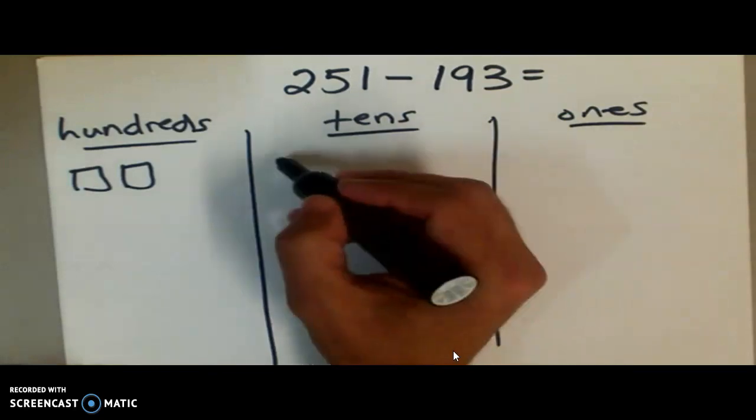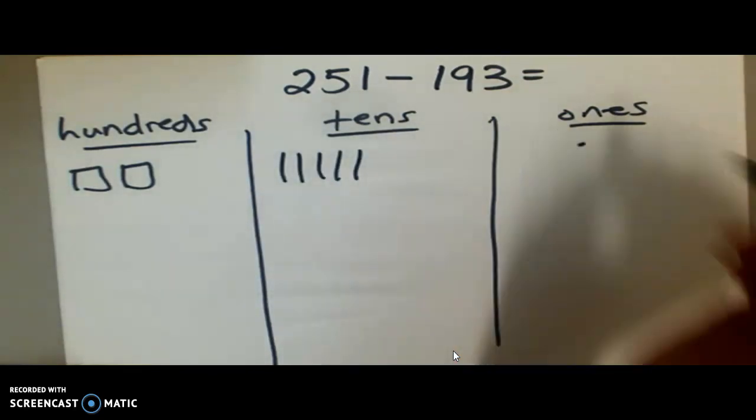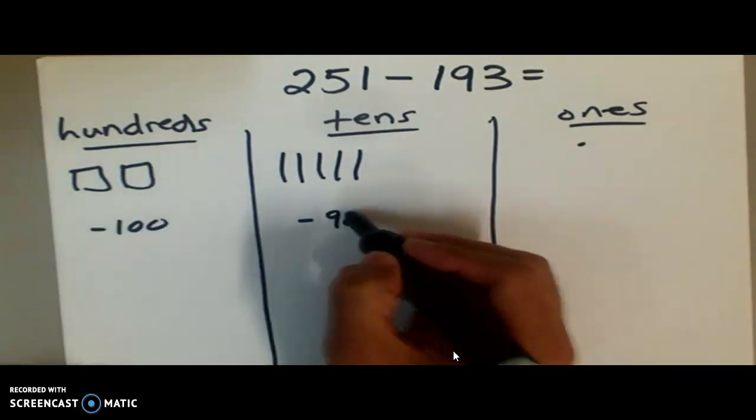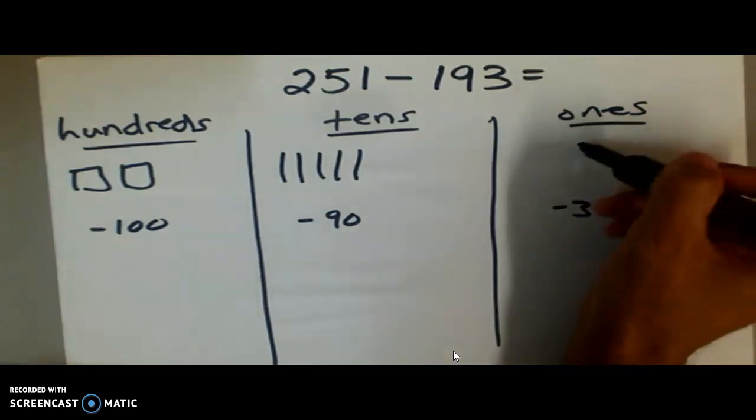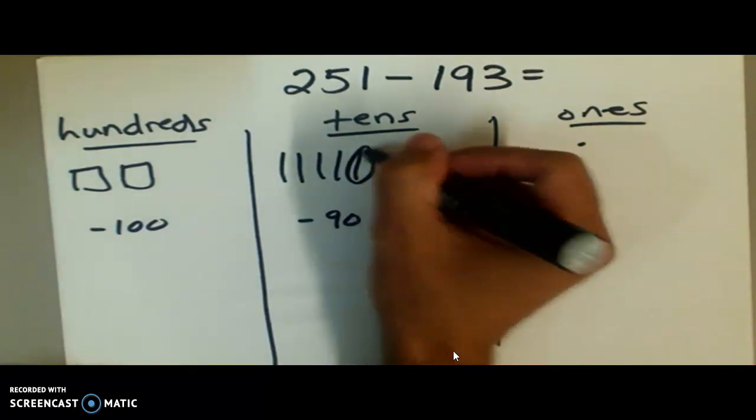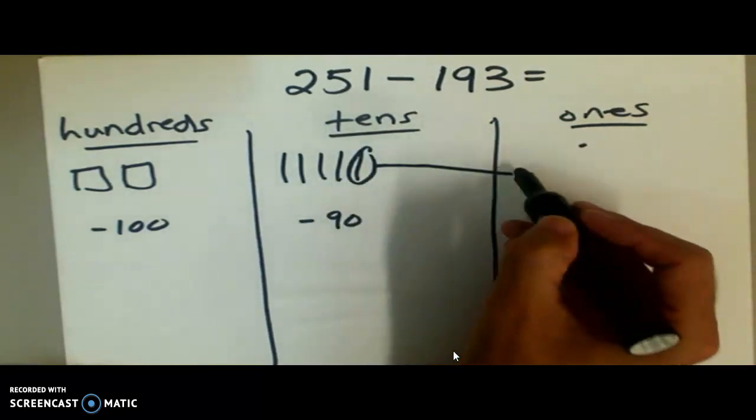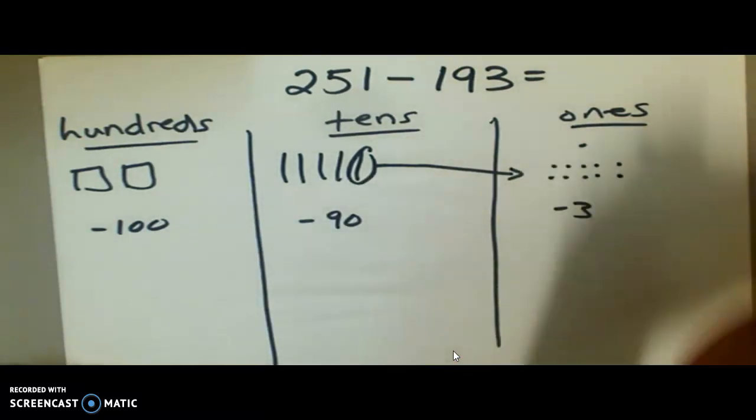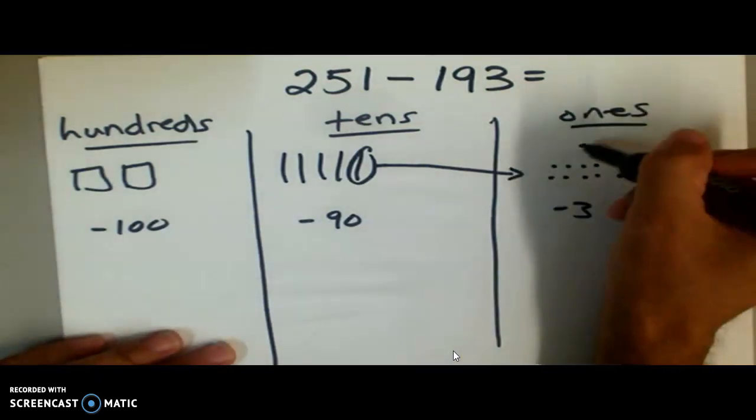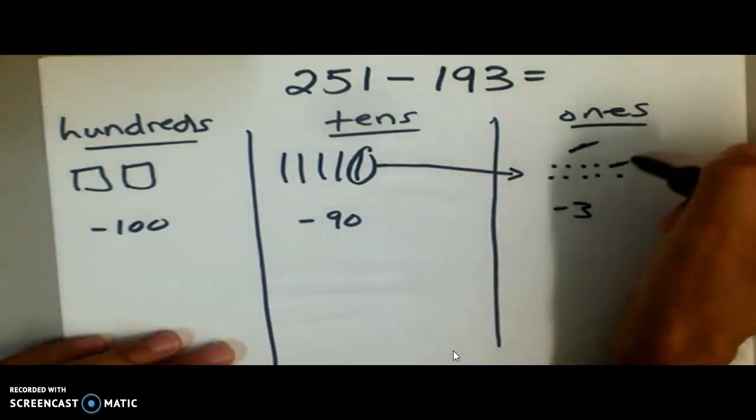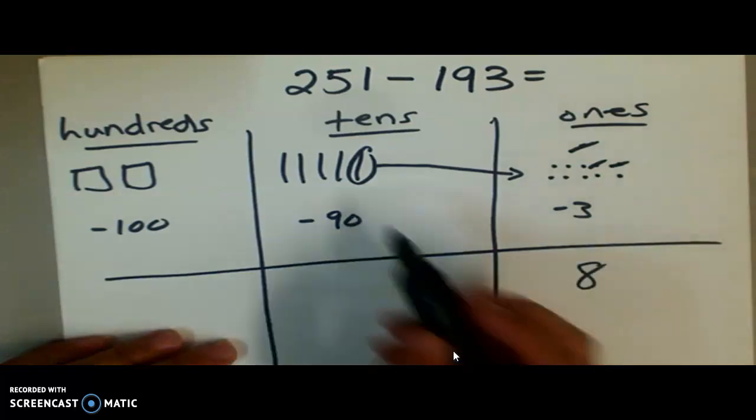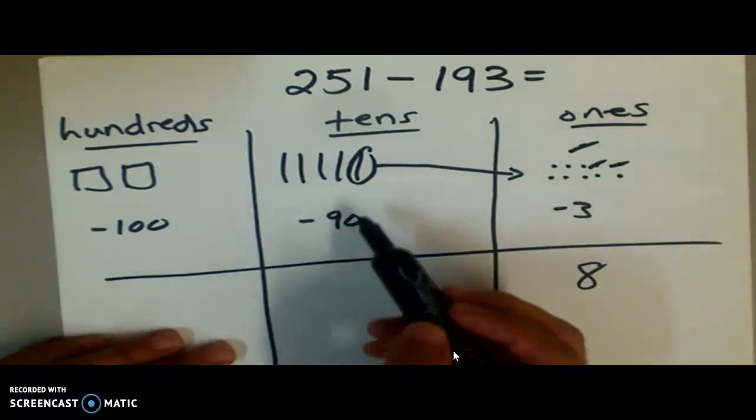All you need is a piece of paper, lined, blank, doesn't matter. So we have 200, just draw a square for two hundreds, 50, one. We're going to subtract 193. We don't, just like we did before, we don't have three ones. So we come over here and we regroup that 10 into 10 ones: 1, 2, 3, 4, 5, 6, 7, 8, 9, 10. Now we can subtract three. I'll take away this and two from here, so we have 5, 6, 7, 8 with eight ones.